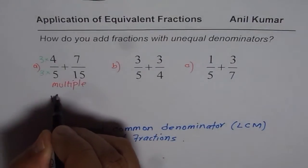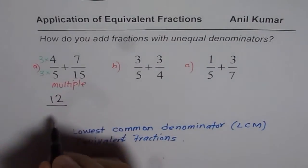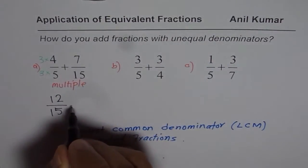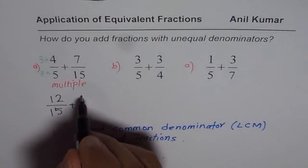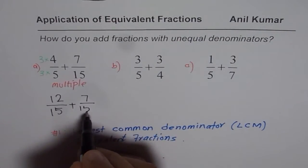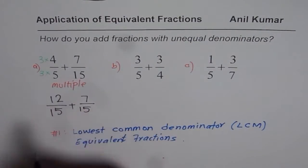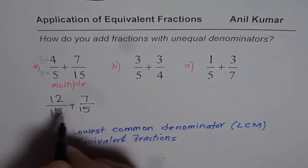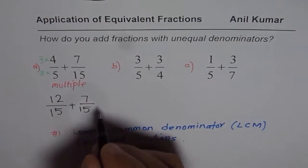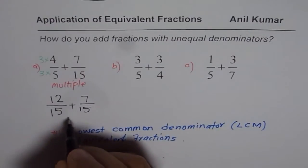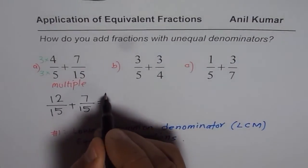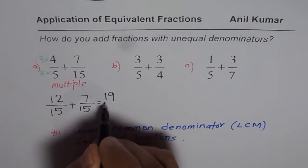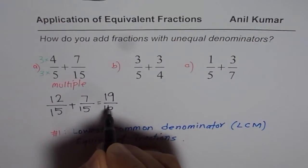Four times three is 12. So let me write 12 over five times three is 15 plus do not change the other fraction since the denominator is a multiple. And now you can add 12 plus seven is 19. So what you get here is 19 over 15 as your answer.